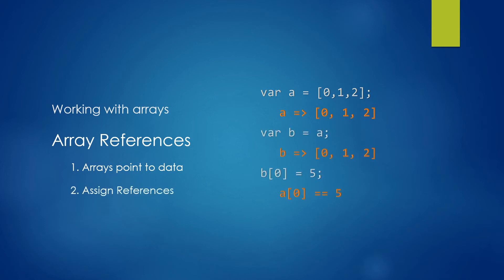This means that if you say var B equals A, now B also points to the very same array, meaning that if you modify the array B, by saying for instance B at 0 equals 5, now A at 0 will also be equal to 5, because they both point to the same array. They are both the same reference.